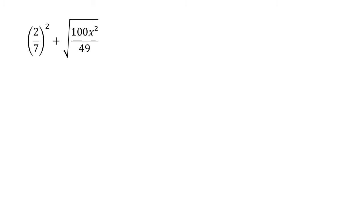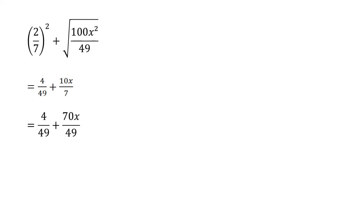2 over 7 to the power of 2 plus the square root of 100x to the power of 2 divided by 49. Simplify and we get 4 over 49 plus 10x over 7. Find the lowest common multiple which is 49: 4 over 49 plus 70x over 49.